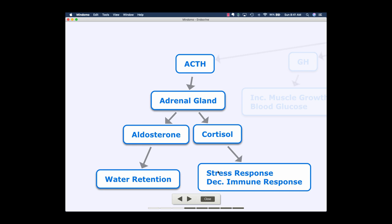But long-term cortisol secretion can lead to a decrease in immune response. So you can become immunosuppressed if you have high cortisol concentrations for a sustained period of time. For ACTH, this is really what I want you to know: where does it come from? It comes from the anterior pituitary. What's the target tissue — the tissue that has the receptor for this specific hormone. What's the action? We get the release of mineralocorticoids and glucocorticoids, like aldosterone and cortisol, and what are the actions of these two?